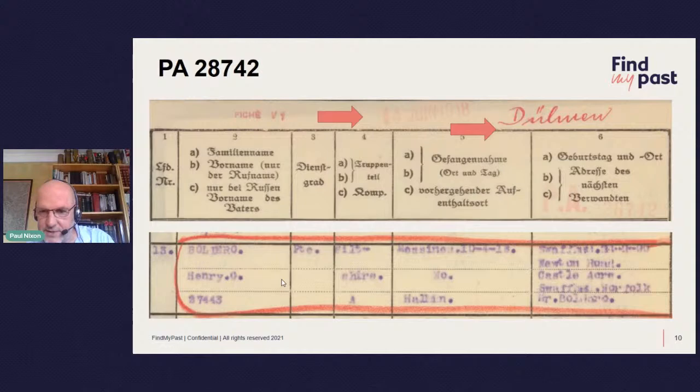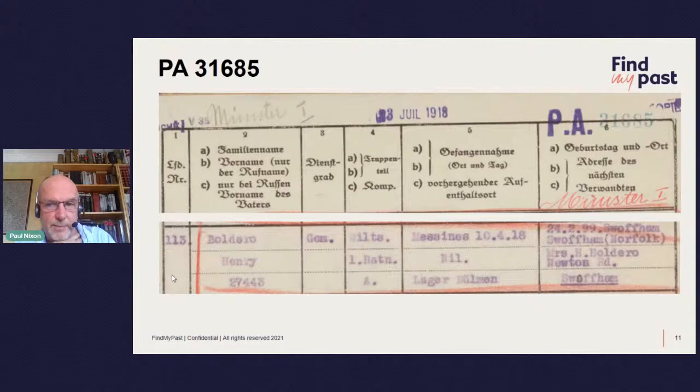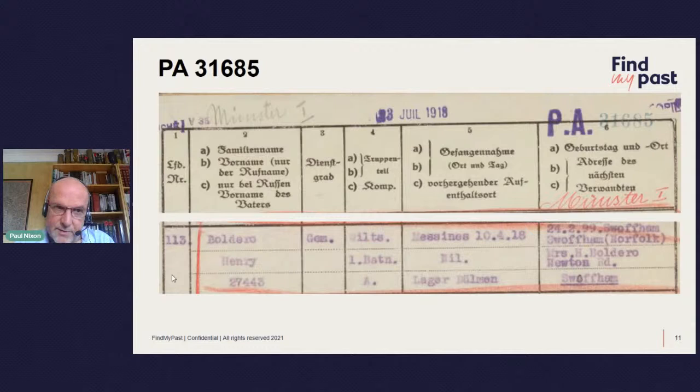The second reference, PA31685, is from another camp — Munster 1, dated 23rd July 1918. You've got the PA reference at the top as the page reference, then all the same information: Wiltshire Regiment, 1st Battalion, A Company, captured at Messines on 10th April 1918, transferred to Munster from Doolman. So you can work out how long he was at each camp and confirm he was held at these two camps.